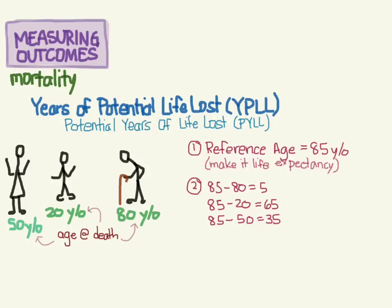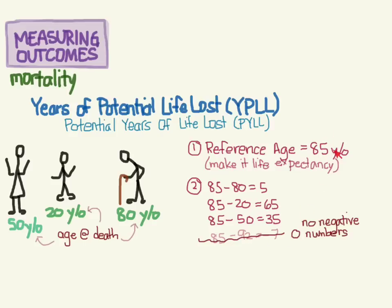Now let's say someone died at 92. That would be 85 minus 92, which equals negative 7. But for these calculations we don't use negative numbers, so we count that as 0. This person didn't die prematurely — they lived past the reference age — so they don't contribute to years of potential life lost.